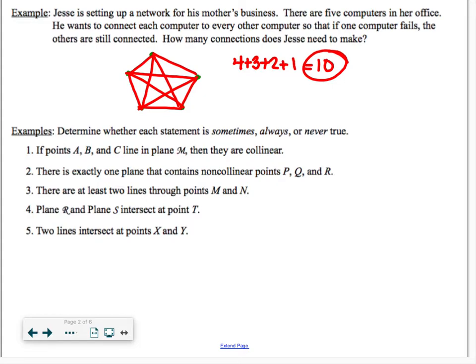Now using our postulates to determine whether each statement is sometimes, always, or never true. Number one, if points A, B, and C lie on plane M, then they are collinear. This is definitely sometimes. Just because three points lie on a plane does not mean they have to be in a straight line, but they could be. There's exactly one plane that contains non-collinear points P, Q, and R. This is actually one of those postulates. Through any three points not on the same line, there's exactly one plane. Therefore, this one must be always true.